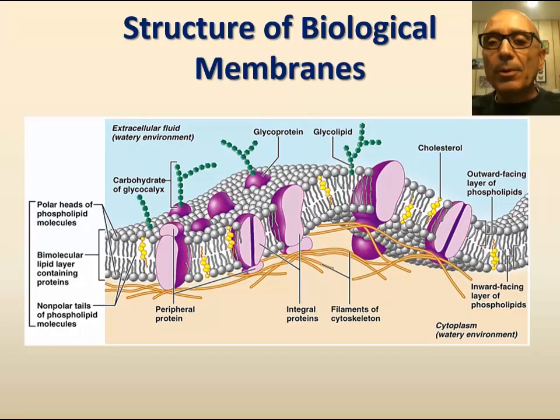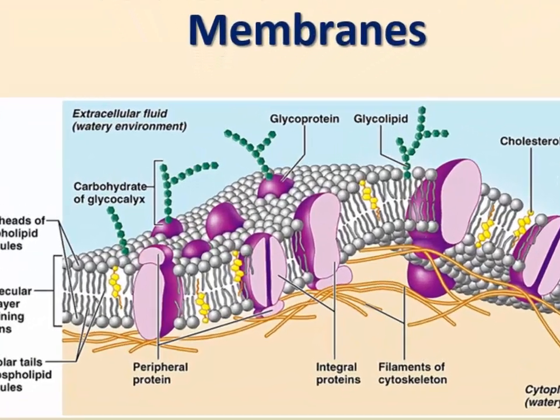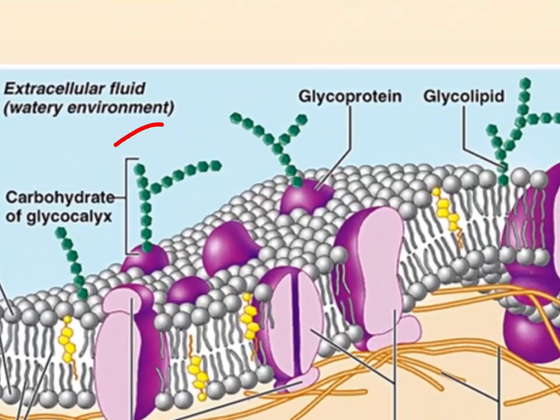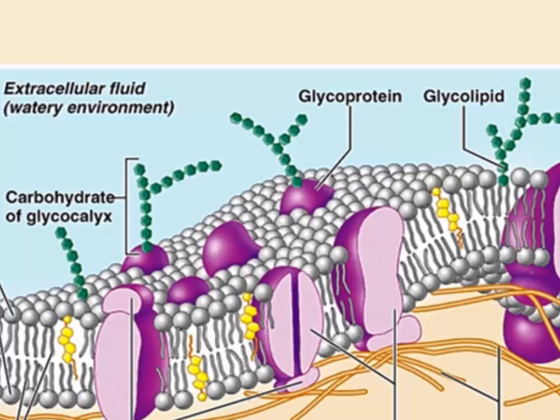The third component of biological membranes are the carbohydrates. These are usually found attached to lipid or protein molecules, mainly on the outer surface of the membrane. One of their major functions is associated with providing a specific identity to cells.